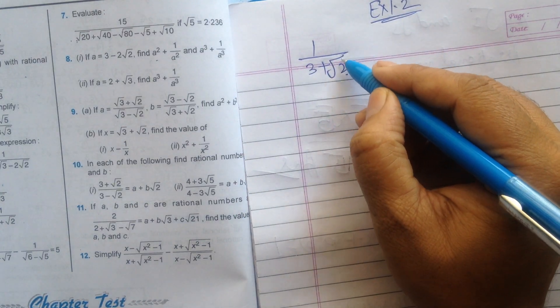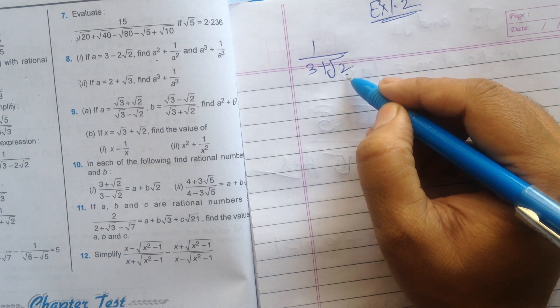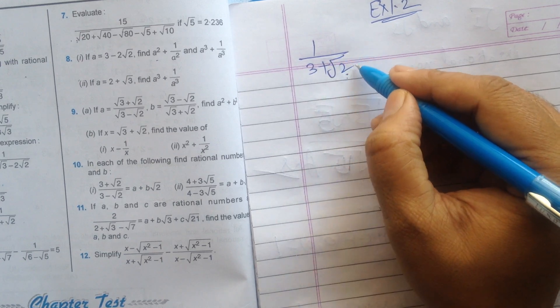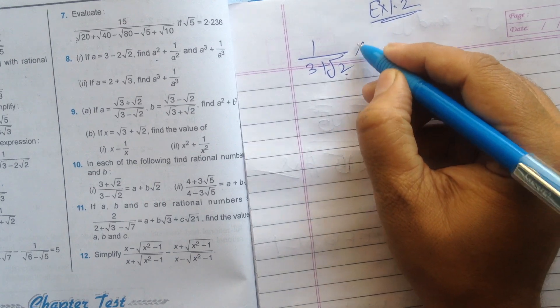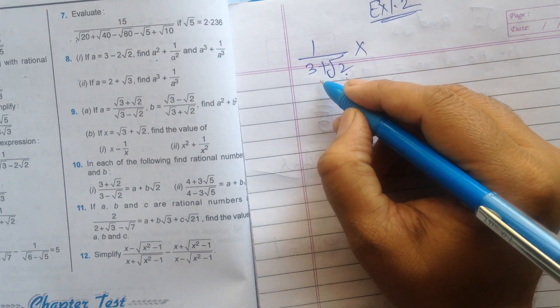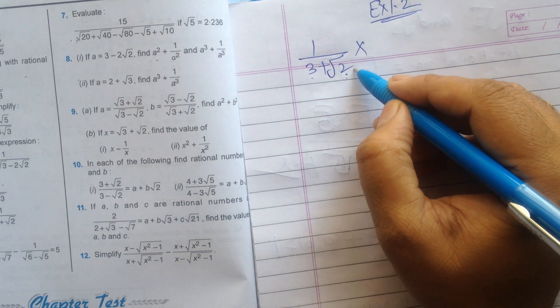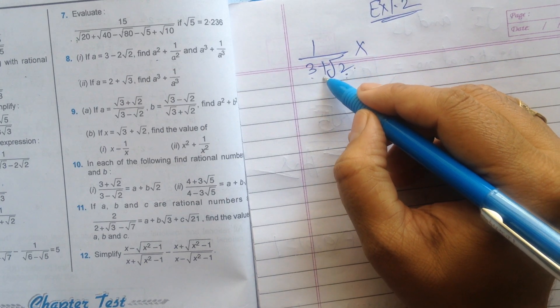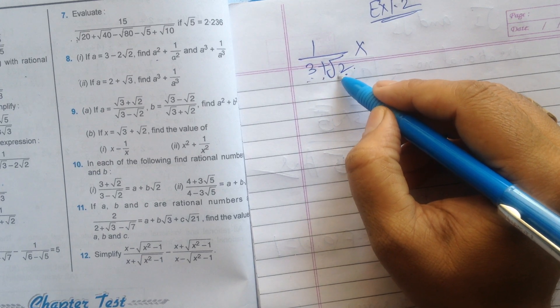Here, 2 ki power square root means 1 upon 2. So here the fraction, we have to remove the square root from the denominator. So we will use the method of rationalization. First of all, we have to find the conjugate of the denominator. 3 plus square root 2, we have to change its sign. The conjugate of 3 plus square root 2 will be 3 minus square root 2.